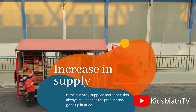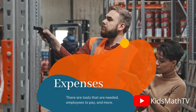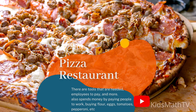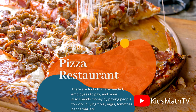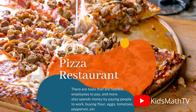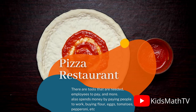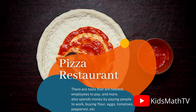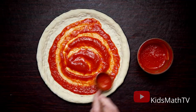This is because people and businesses who produce goods need to know that they will make money off of a certain product, since making products to sell also costs money. There are tools that are needed, employees to pay, and more. For example, a pizza restaurant doesn't just make money — it also spends money by paying people to work, buying flour, eggs, tomatoes, pepperoni, and cheese to make into pizzas, repairing things if they break, and running lights and water to the restaurant. If the price of their pizzas goes up, however, they will be able and willing to make more pizza, since they are making more money that will help them do all the things they need to do to run their business. This connection between the price of a product and supply is called the supply relationship.